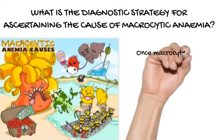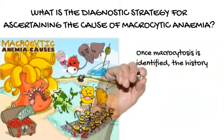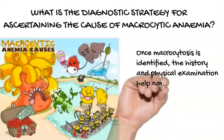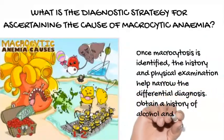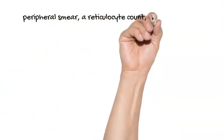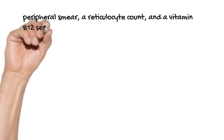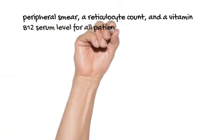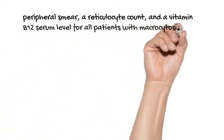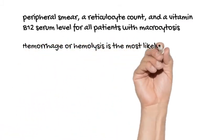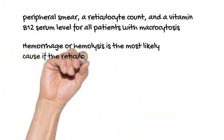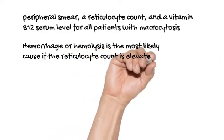Once macrocytosis is identified, the history and physical examination help narrow the differential diagnosis. Obtain a history of alcohol and medication usage. Physicians should begin laboratory evaluation by ordering a peripheral smear, a reticulocyte count, and a vitamin B12 serum level for all patients with macrocytosis. Hemorrhage or hemolysis is the most likely cause if the reticulocyte count is elevated.